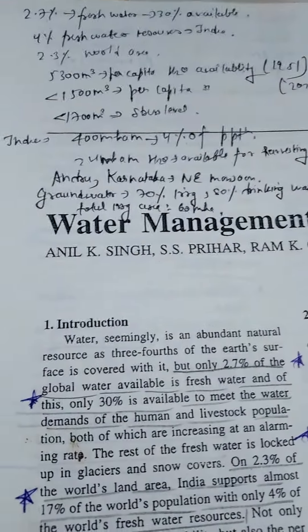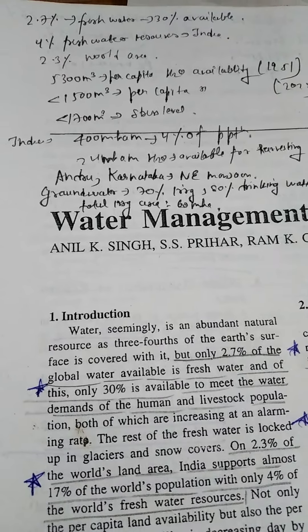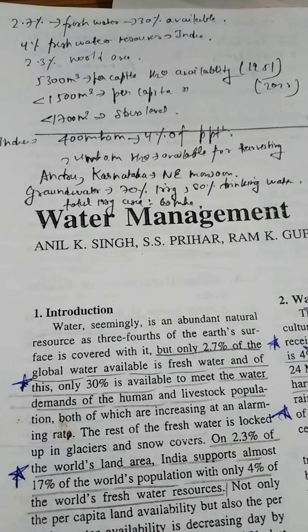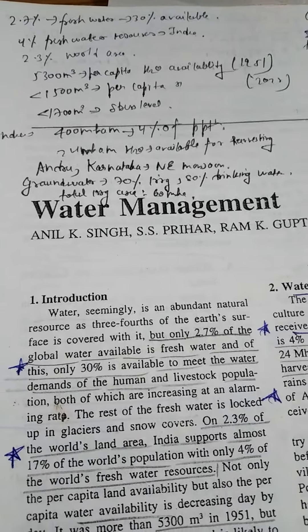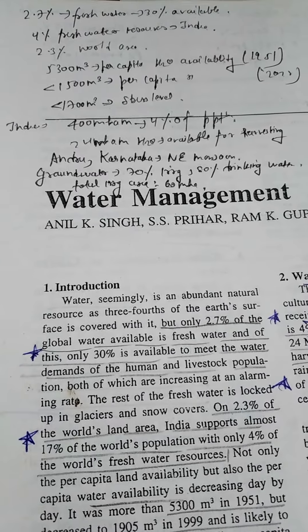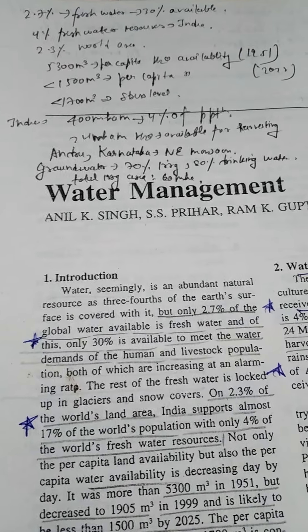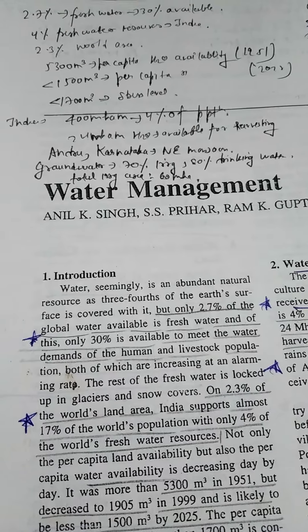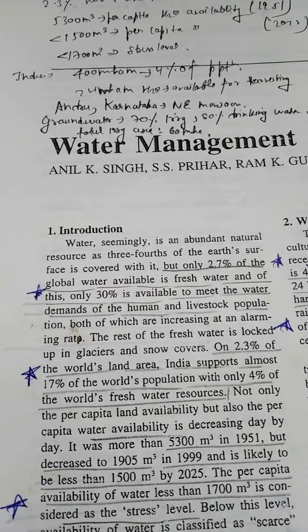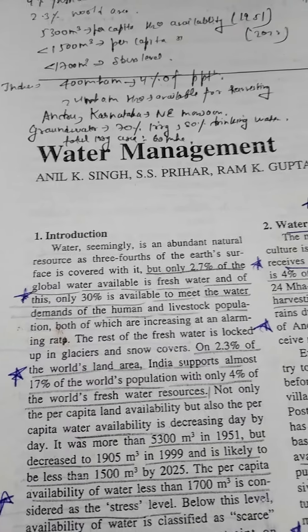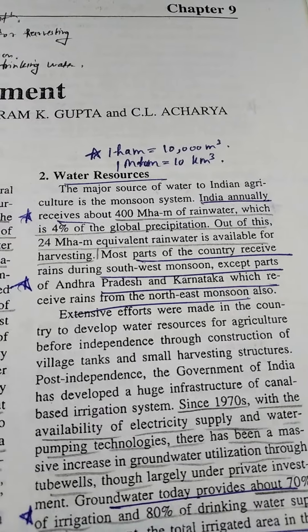At the last, some important figures: Earth has only 2.7% fresh water resources, out of which only 30% is available to us. 4% of the total fresh water resources in the world are present in India. India has 2.3% of the world's geographical area. If the water level goes below 1700 m³ per capita, it is a stress level. In 2025, per capita water availability in India will be less than 1500 m³. India receives 4% of global precipitation. 1 million hectare-metres equals 1 kilometer cube.